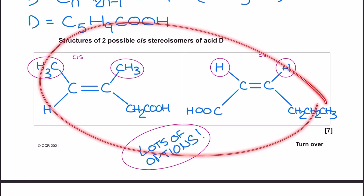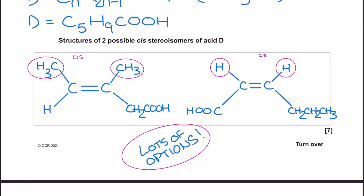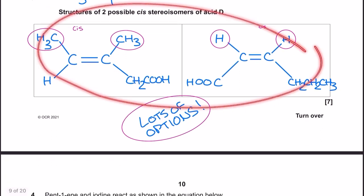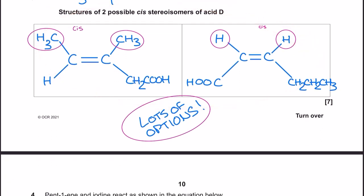You've actually got loads of options for the stereoisomers here. If you look at the mark scheme, there are many different possibilities, and sometimes people talk outside the exam hall comparing what they drew. There are so many different valid answers. You might talk to three other people and they all gave slightly different options — some might be incorrect, but don't be downhearted, because you might have given two valid structures just like I have here. Check the mark scheme and make sure you're secure with the theory of the difference between E, Z, cis, and trans.